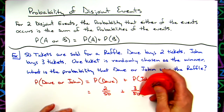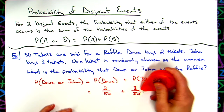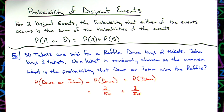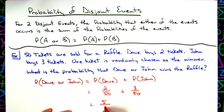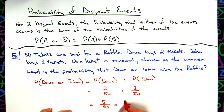Three over 50, not three over 500. So then we add them up, and that gives us 5 out of 50, or in other words, one-tenth. So the probability of either Dave or John winning the raffle is one-tenth.